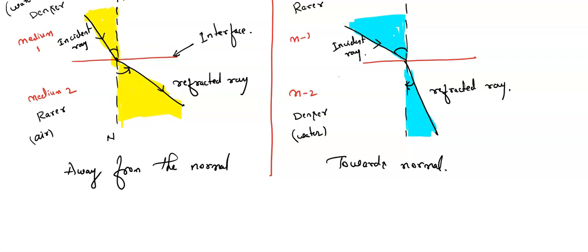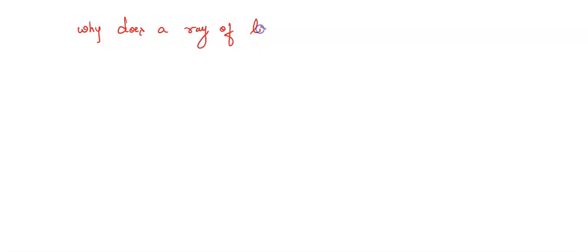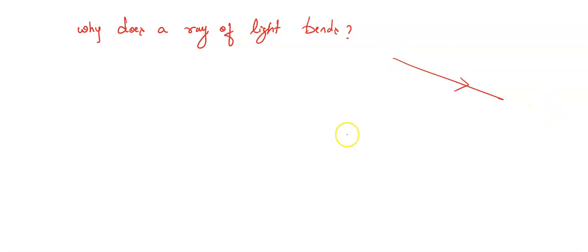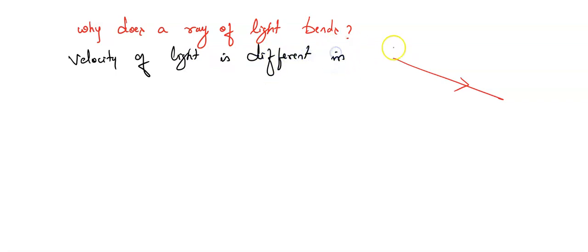Why does a ray of light bend? We already know that light follows a straight line path — so why does it bend? The answer is: the bending of light takes place because the velocity of light is different in different mediums. The speed of light in all mediums is different — that is the major factor.